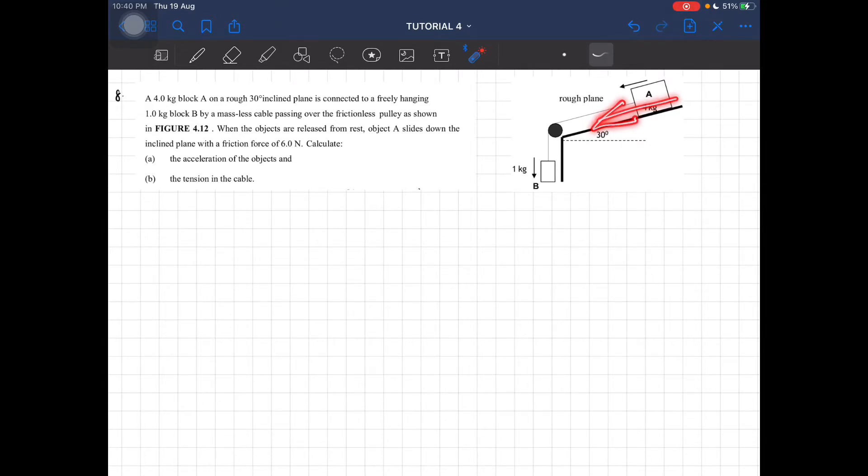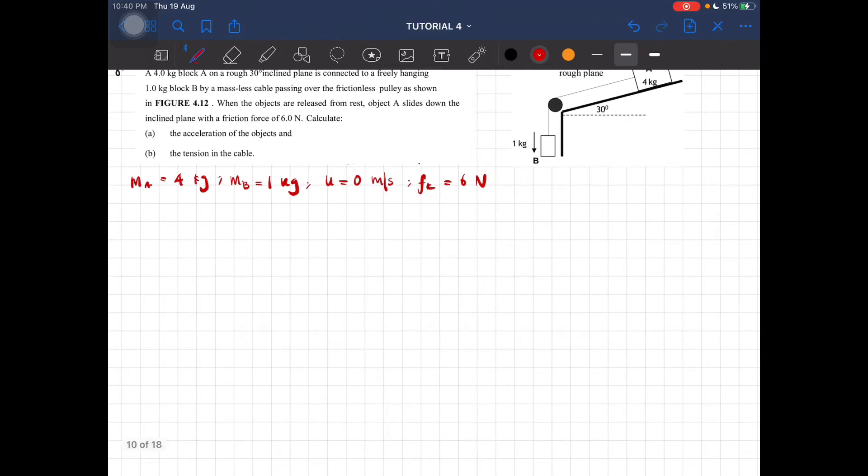So we have mass A equals 4 kilograms, mass B equals 1 kilogram. It starts from rest, object A slides down with a friction force of 6 newtons. Now let's draw the free body diagram to find the acceleration and the tension.